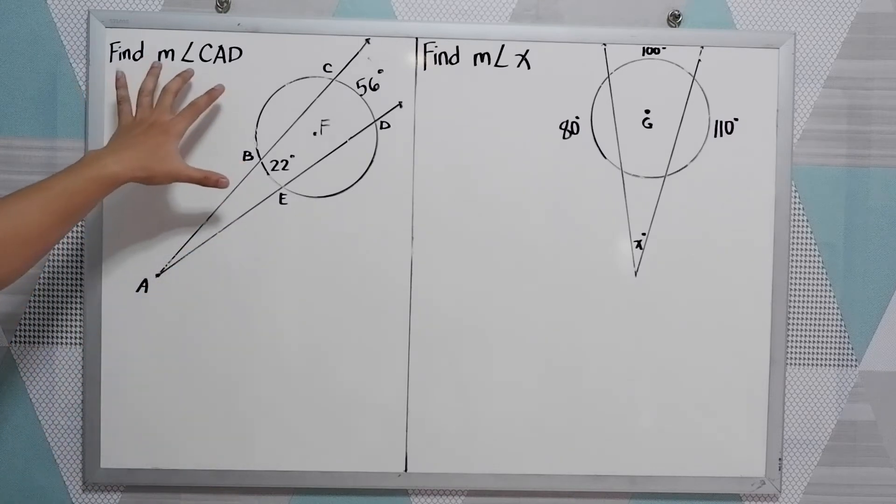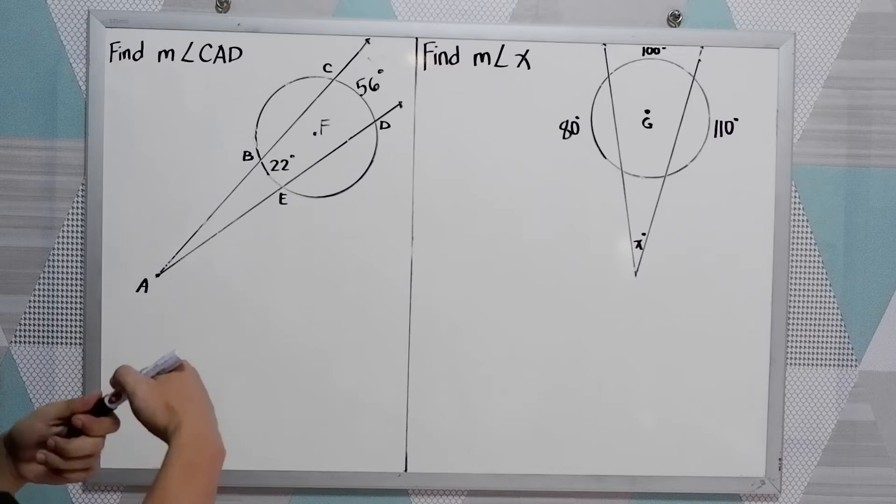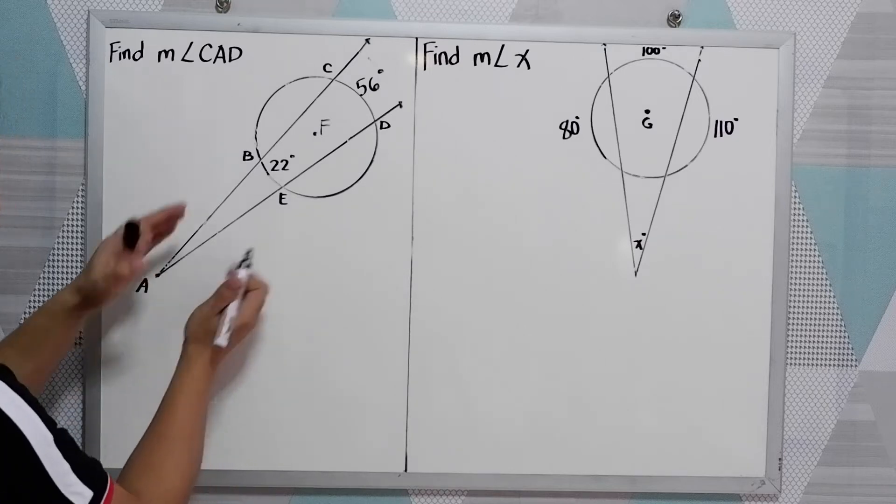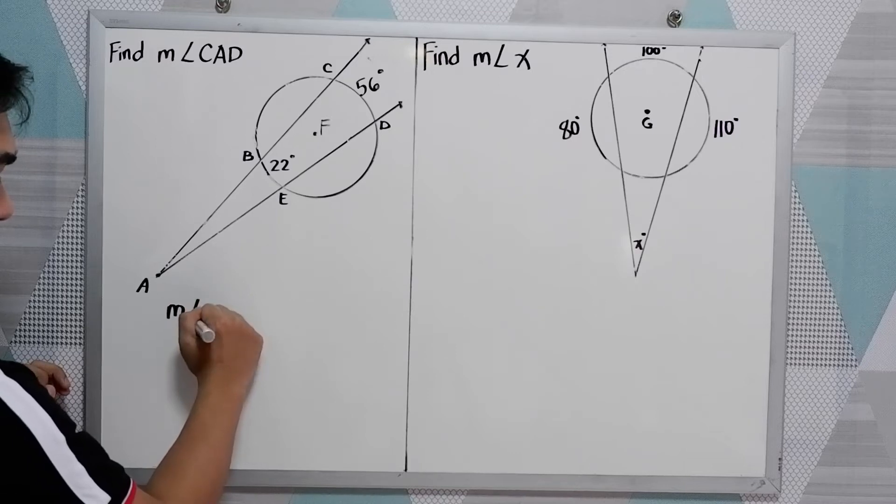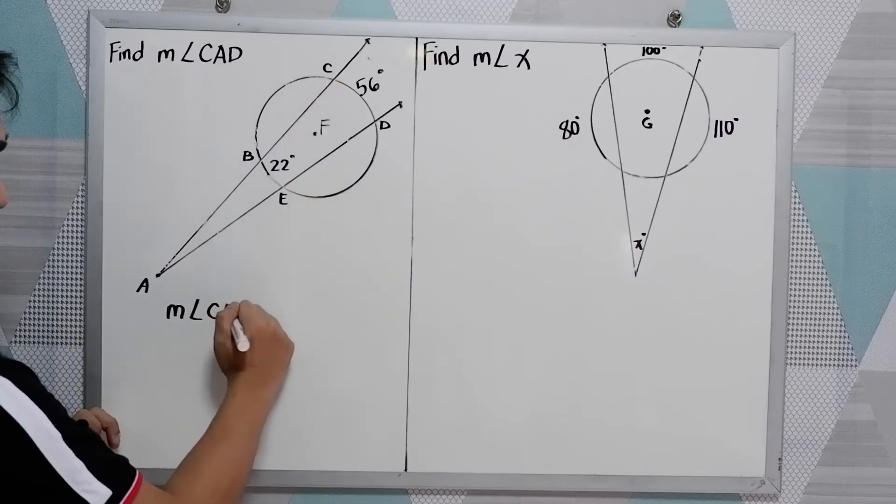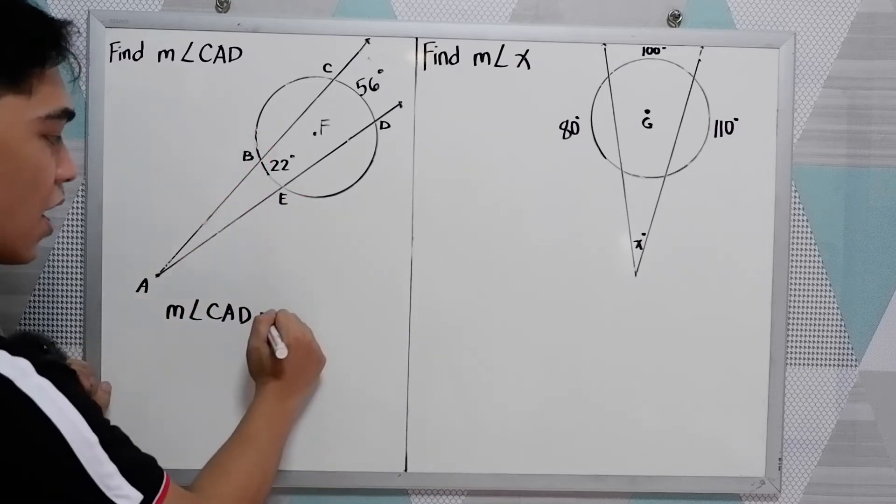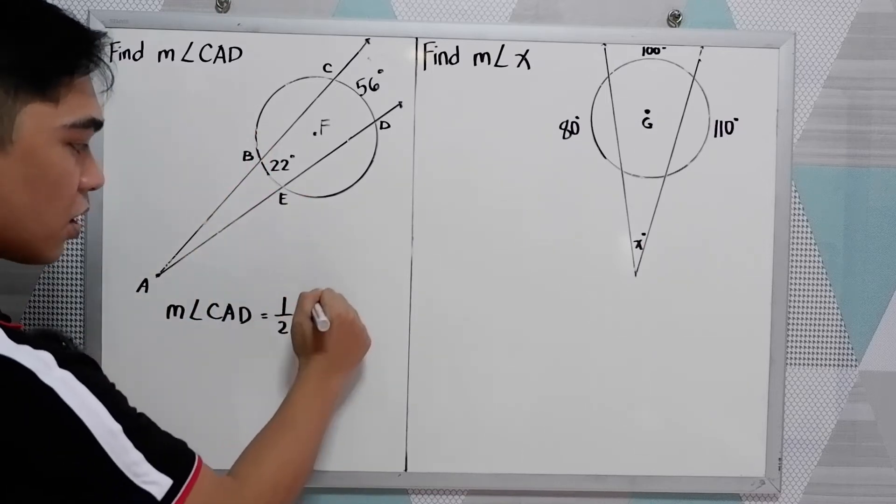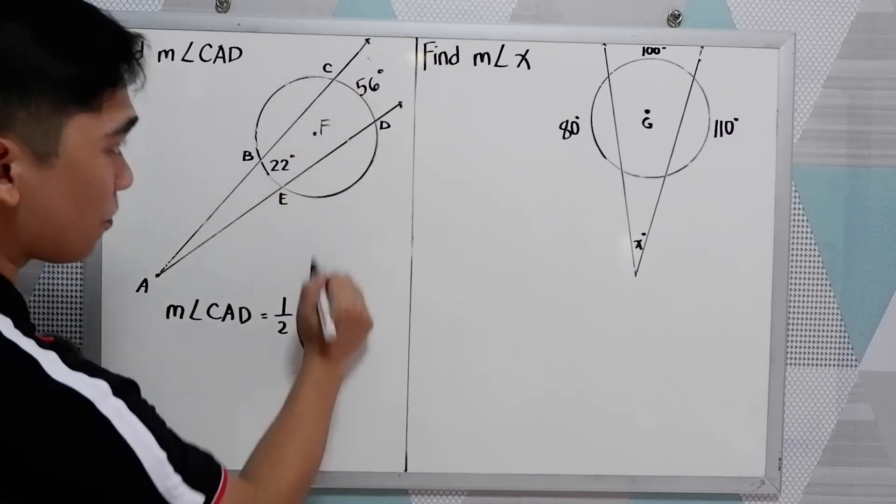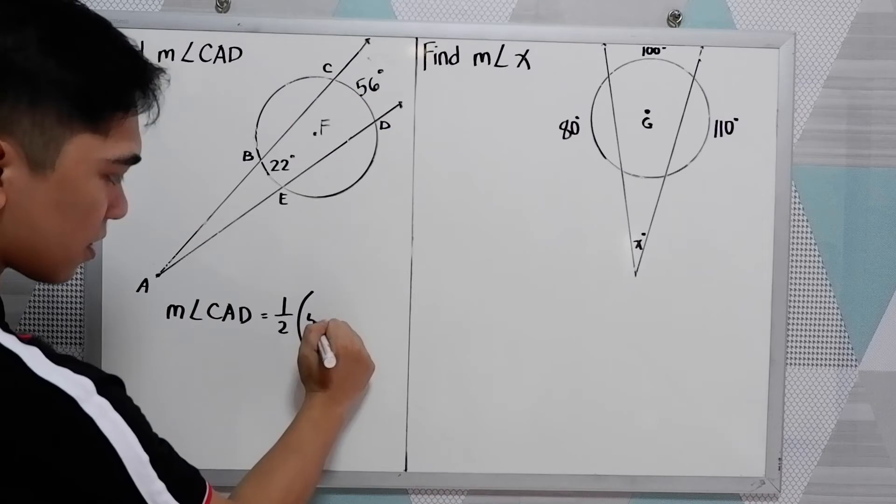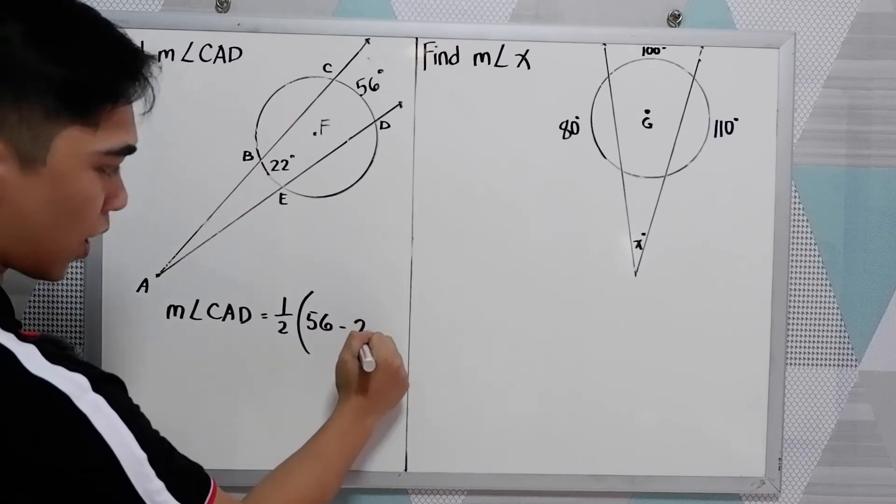Let us find the measure of angle CAD. In our theorem, the measure of angle CAD, the angle formed in the exterior of the circle, is equal to one half of the difference of its intercepted arcs. So we have here 56 minus 22.